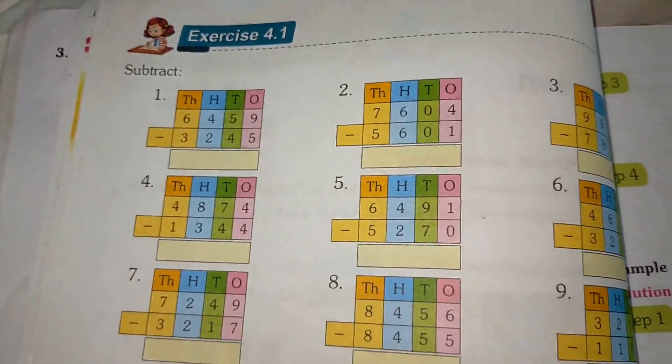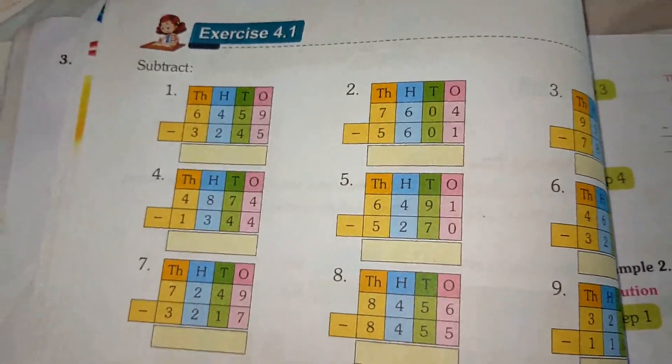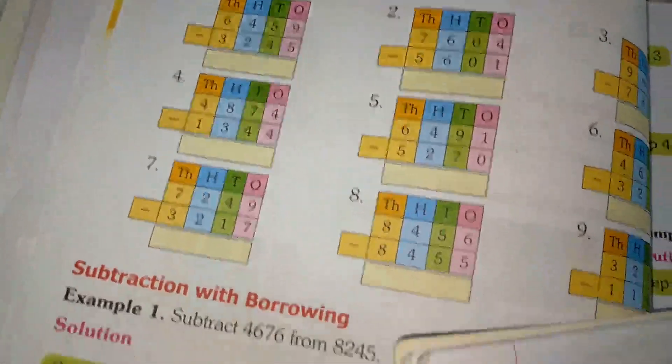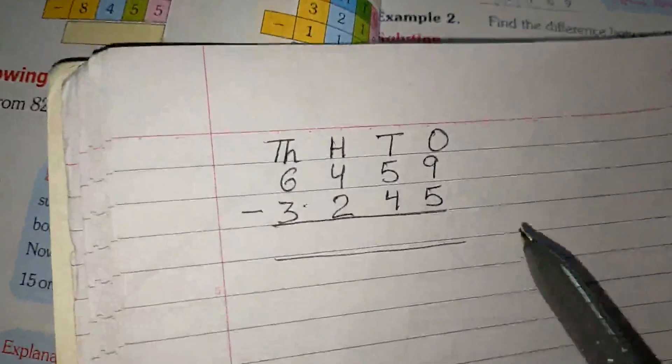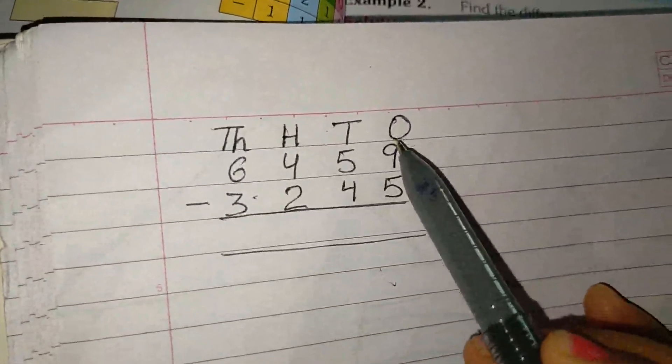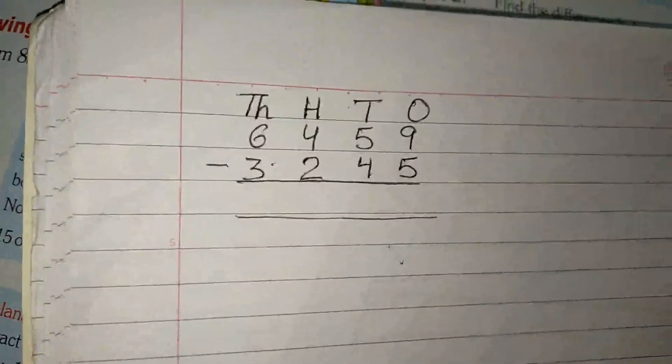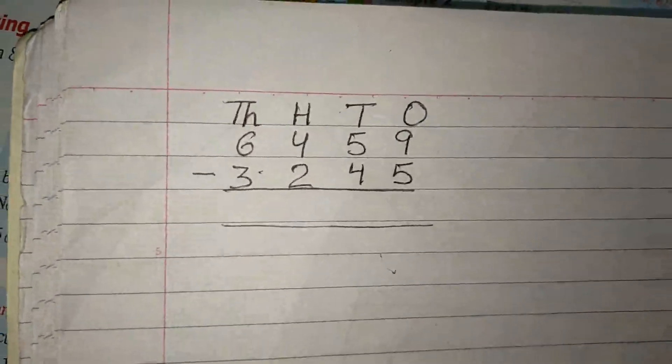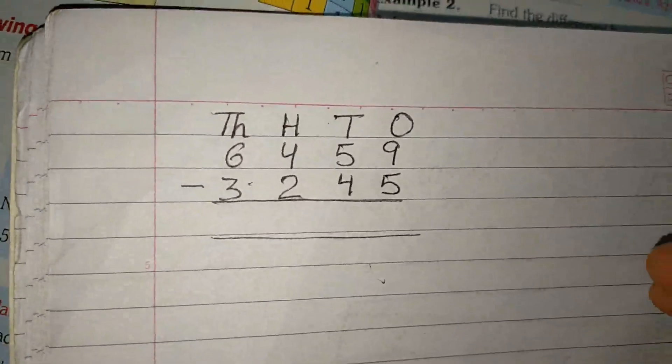You have to do exercise 4.1 in your copy. First, write in this order: 1000, 100, 10, and 1. You can solve the questions in your rough copy first, and then in your fair copy.